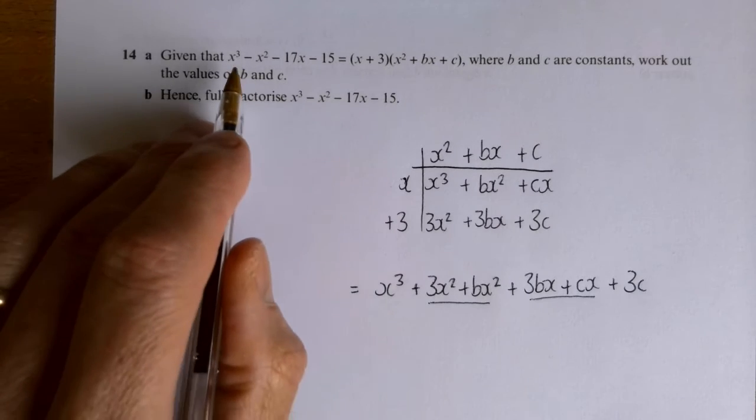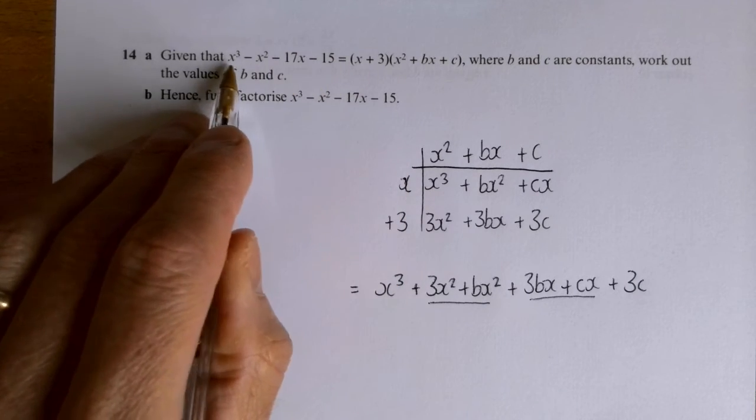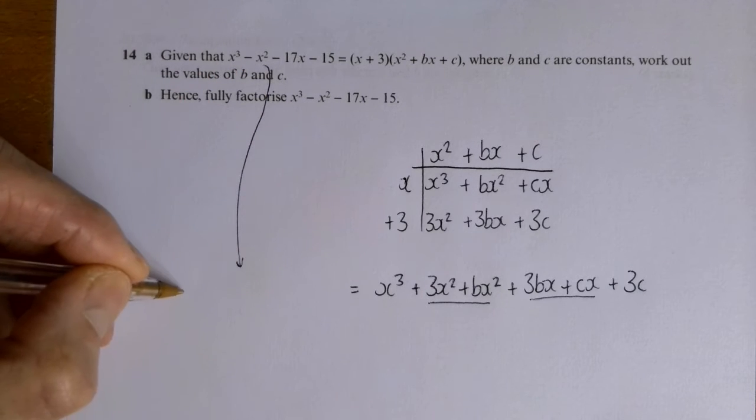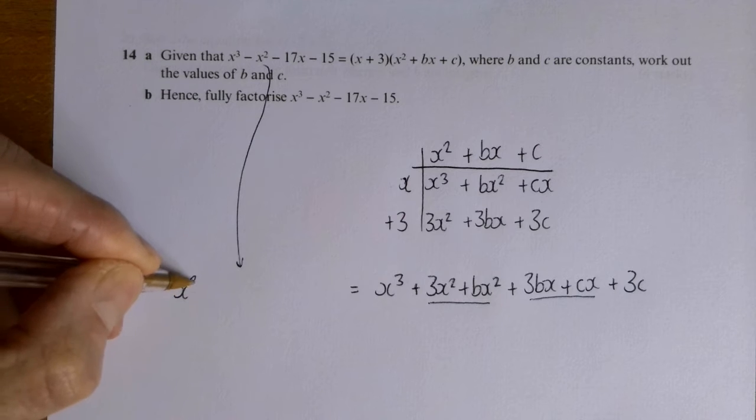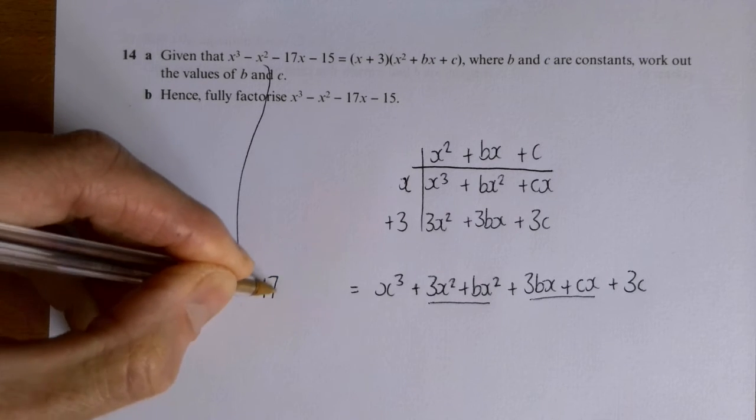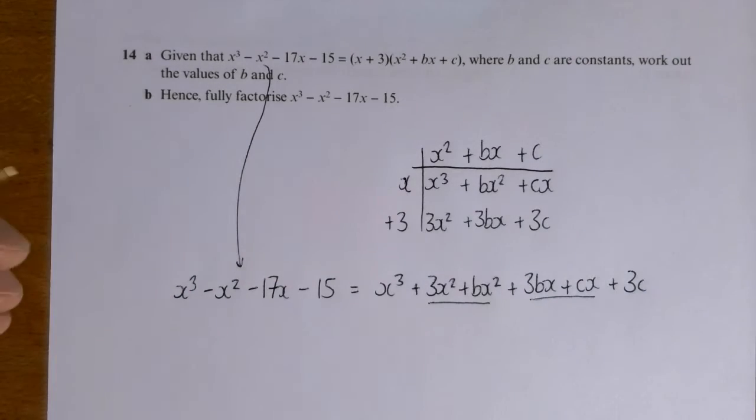So if I then look at the question, this we're told is equal to this. So I'm going to write that on the left hand side. So that's x cubed minus x squared minus 17x minus 15.